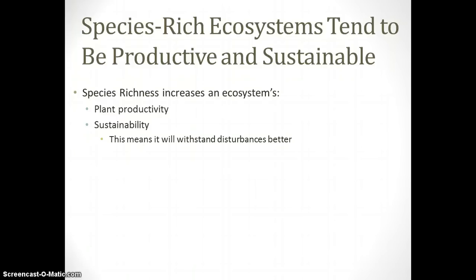If you have a species-rich ecosystem, it tends to be productive and sustainable. Species richness gives you greater plant productivity and sustainability, and it makes withstanding disturbance much better. This connects to Net Primary Productivity, or NPP. When you do your homework on ecosystem succession, you'll encounter the terms inertia and resilience — and that's exactly what we're talking about here.